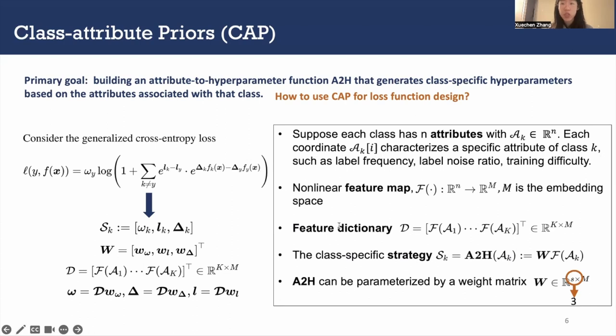ImageNet has K which is equal to 1000. iNaturalist has K which is equal to 8,142 classes. Each row of the feature dictionary is the features related to the attributes of class K. We generate the strategy vector like this.